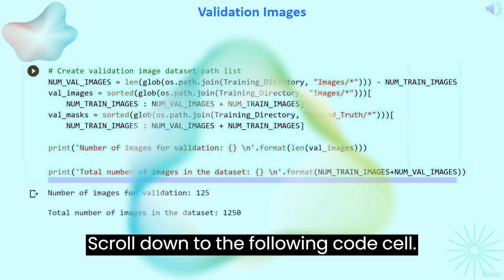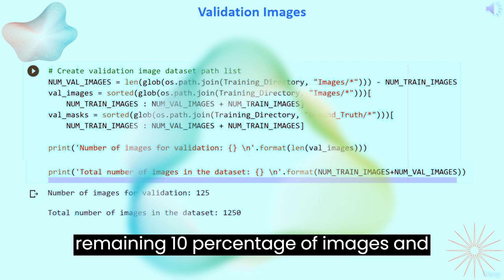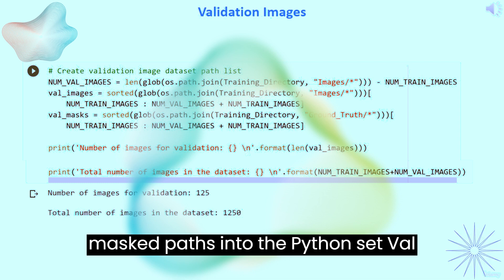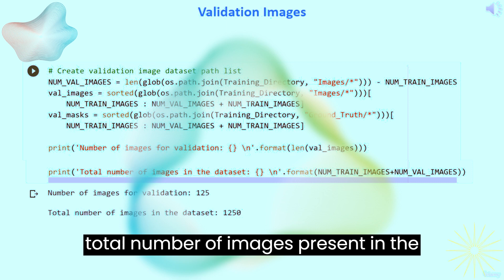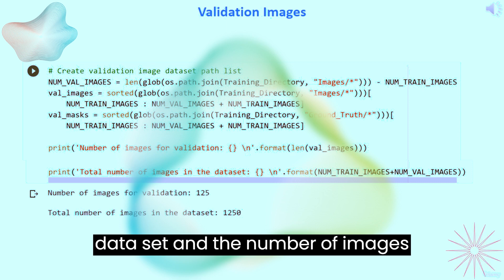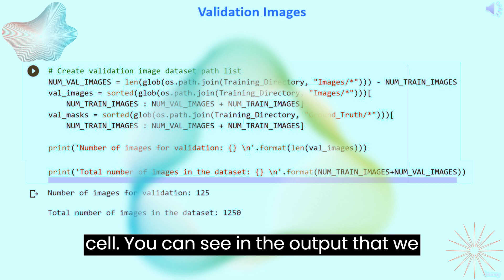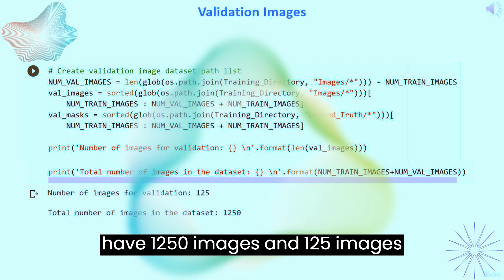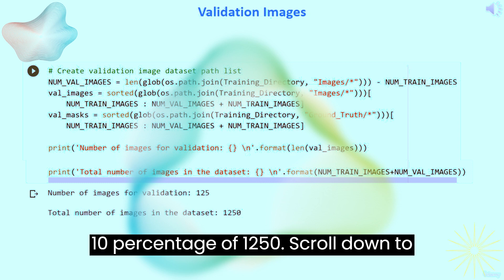Scroll down to the following code cell. In this code snippet, we store the remaining 10% of images and masked paths into the Python set val_images and val_paths. Also, we print the total number of images present in the dataset and the number of images considered for validation. Run the code cell. You can see in the output that we have 1250 images and 125 images have been taken for validation, which is 10% of 1250.